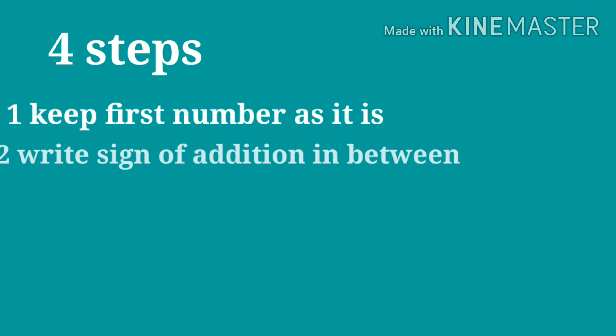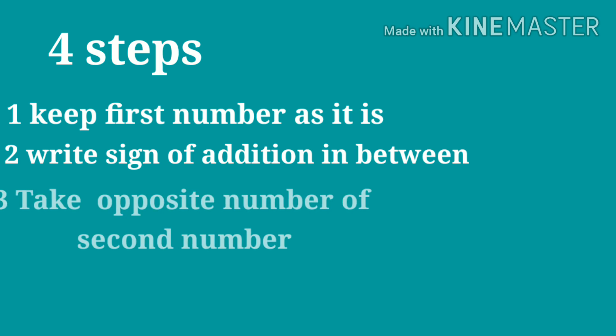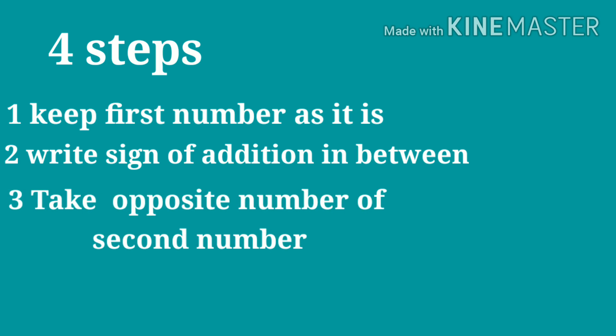To subtract, follow the following 4 steps. Keep the first number as it is. Write down the sign of addition in between. Take the opposite of second number. And follow the rules of addition and add the numbers.